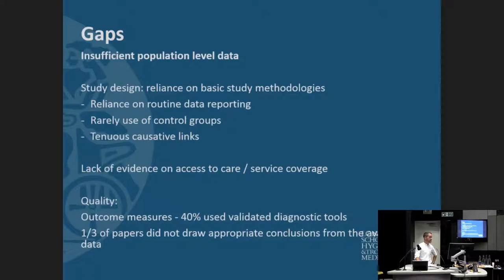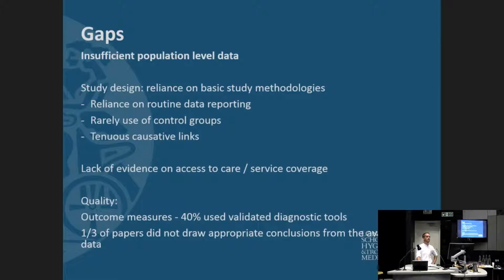So where are the gaps? One of the major problems identified thus far is a real lack of population-level data. Very few studies report at a population level, which makes it very difficult to look at issues related to access to care and the treatment gap, and to make strong statements regarding the burden of disease in this population. There is also a current over-reliance on very basic study methodologies — lots of descriptive work, retrospective analysis of routine hospital data — and very rarely are we finding the use of control groups.